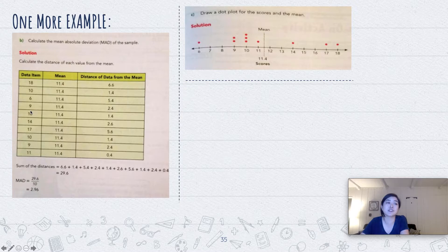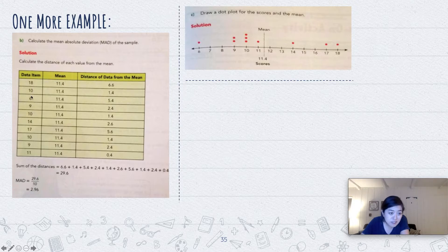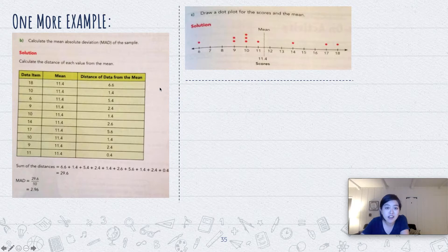And I just moved that over here, so here's our MAD: 2.96. Now part C says to draw a dot plot of the score then the mean. So let's see, our lowest score is a 6 and then our highest score is, it looks like it's 18. And you're just drawing the dot plot and you're also showing where the mean is here.